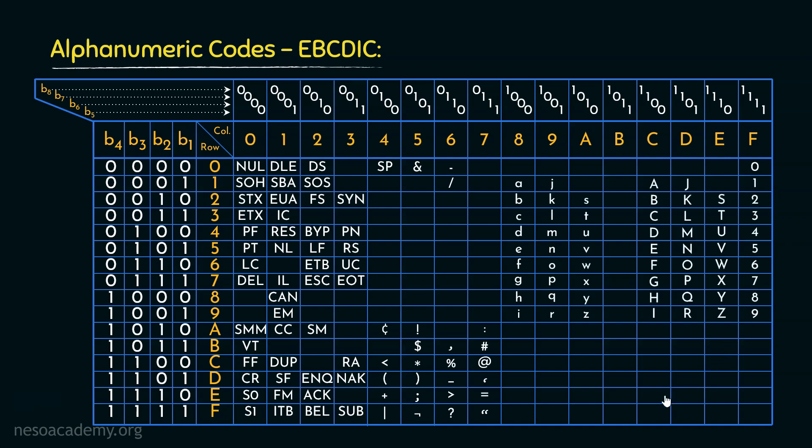Now, you might be wondering why there are these blank spaces. Actually, these are left blank intentionally. This chart here is an invariant version of the EBCDIC code. In these blanks, region specific characters such as Chinese, Japanese, Korean etc. are specified. On the contrary, the character sets mentioned here, they remain the same in case of all the variants of the EBCDIC codes. EBCDIC was invented by IBM in 1963. So that is all about the EBCDIC codes.